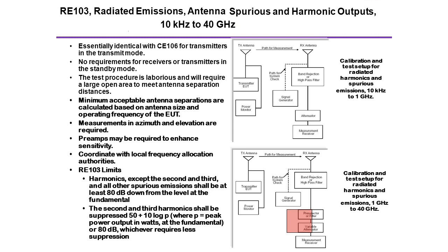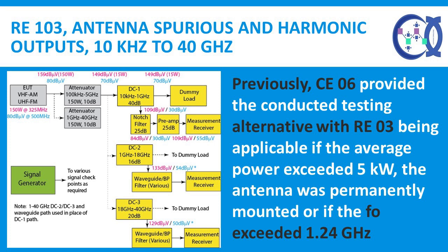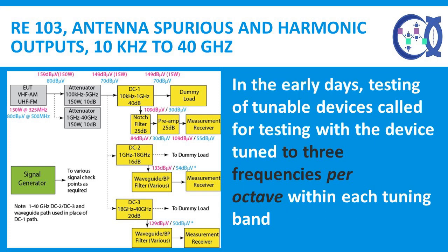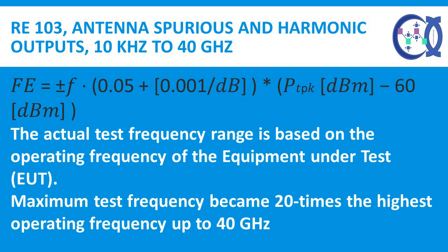Many details are involved and it is easy to induce minor factors affecting the results. Previously, CE-106 provided the conducted testing alternative with RE-103 applicable if average power exceeded 5 kW, the antenna was permanently mounted, or the operating frequency exceeded 1.24 GHz. In earlier versions, testing of tunable devices called for testing at three frequencies per octave within each tuning band, including within 5% from each end. The test frequency range was extended to 40 GHz instead of treating 20 GHz to 40 GHz as optional. The maximum test frequency is 20 times the highest operating frequency of the EUT, up to 40 GHz.